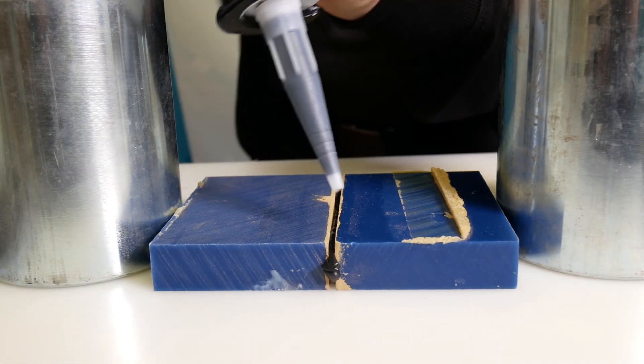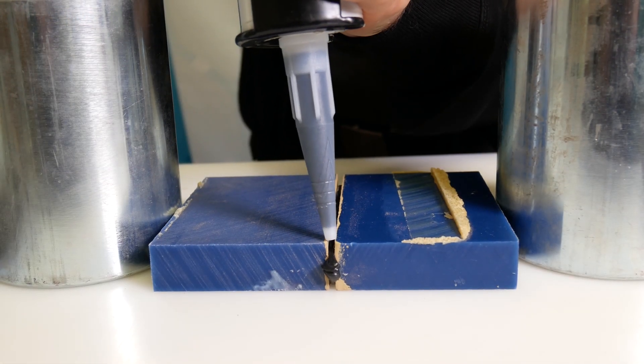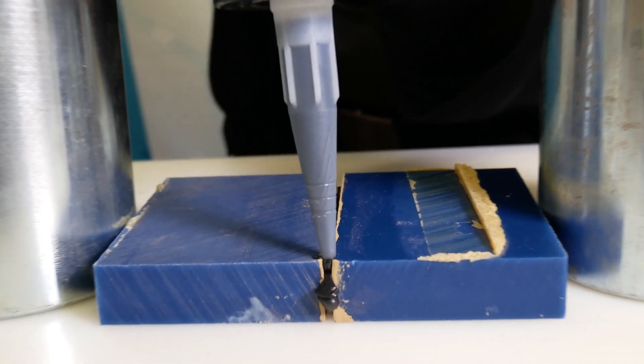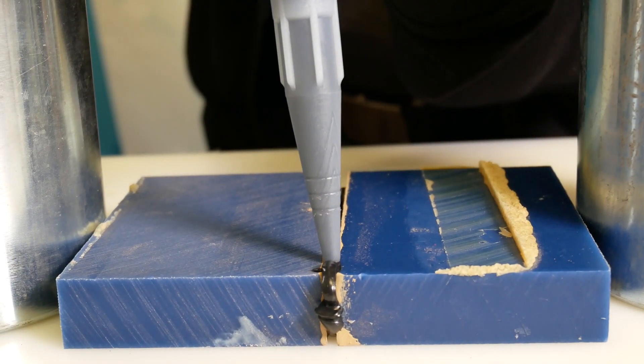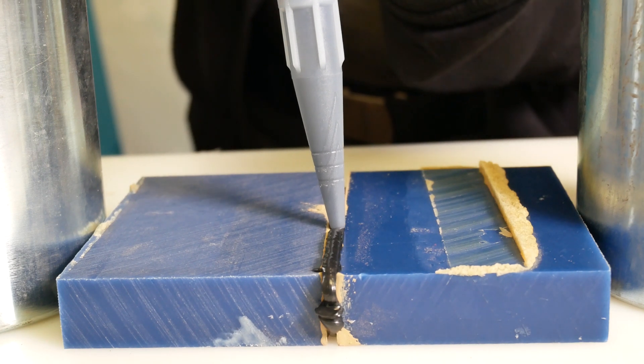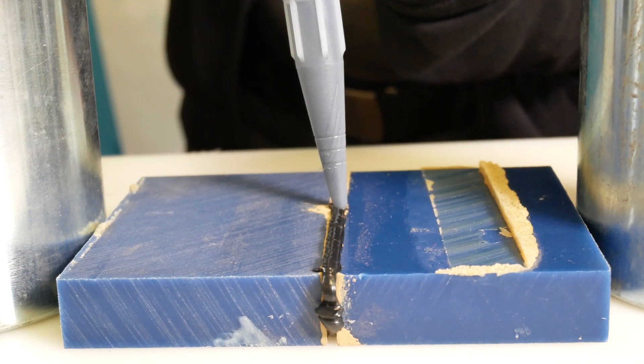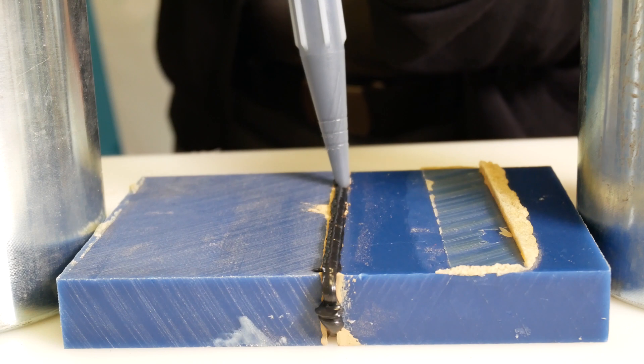Should it happen that the glue did not reach some spaces, you may add more. Don't worry. The most important is that the added glue merges with the previous layer. It will come out a bit, but I'm sure it is well merged.